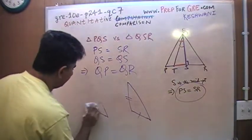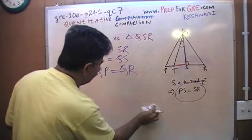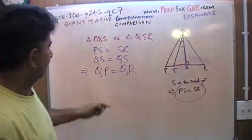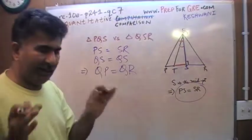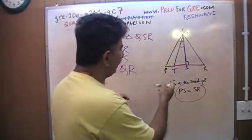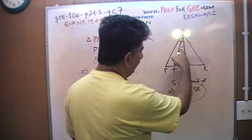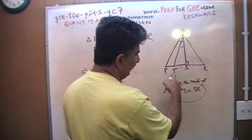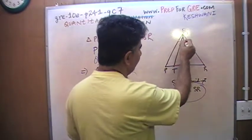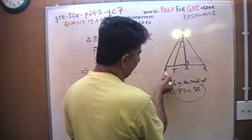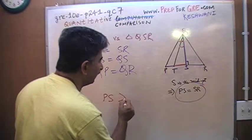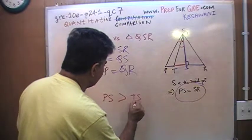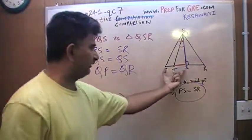The two triangles are exactly the same: triangle PQS and triangle QSR are exactly the same. Since this is a small triangle, it faces a smaller side T to S, and since this is a large triangle, it faces a larger side P to S. P to S is much bigger than T to S, but P to S we already know is the same as S to R.